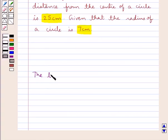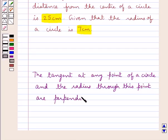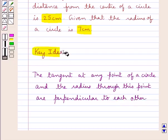Before moving on to the solution, let's discuss one result according to which we have that the tangent at any point of a circle and the radius through this point are perpendicular to each other. This is the key idea that we use for this question.